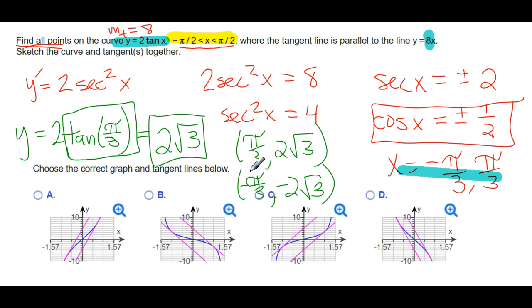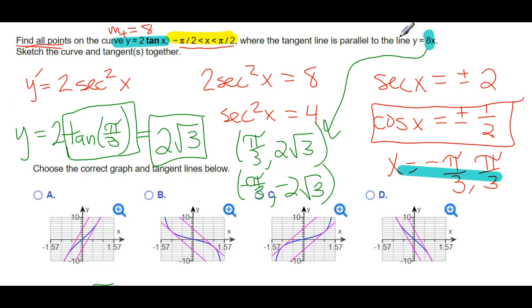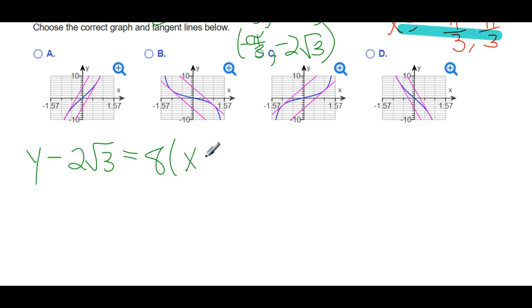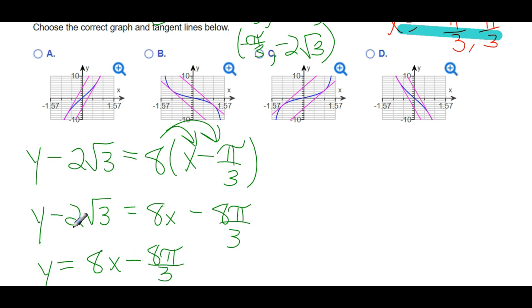So those are the points I need. With this point and this slope, I can use point-slope form to find the exact equations of the lines. So: y − 2√3 = 8·(x − π/3). Distributing: y − 2√3 = 8x − 8π/3. Adding 2√3 over: y = 8x − 8π/3 + 2√3. That's one of the lines.